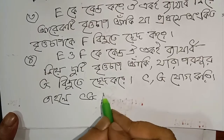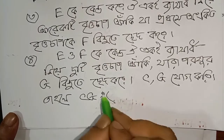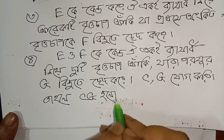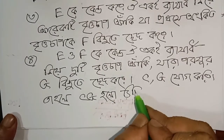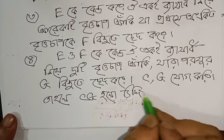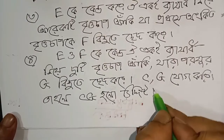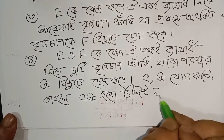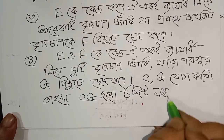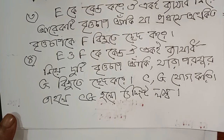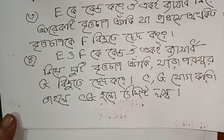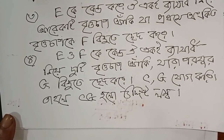The construction is complete — two circles intersecting. The claim is verified. Here we go — the construction is done.